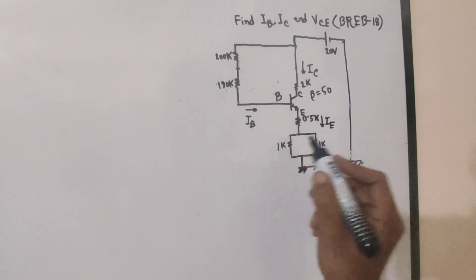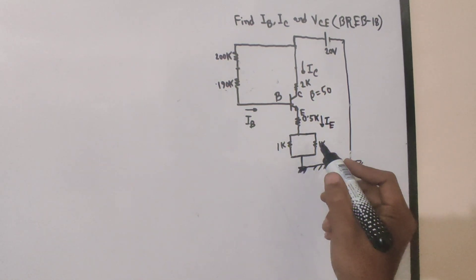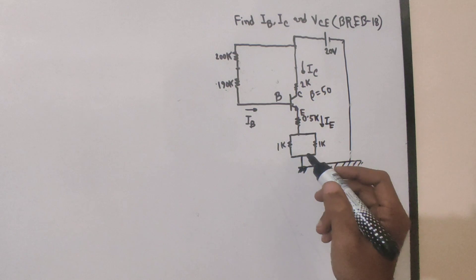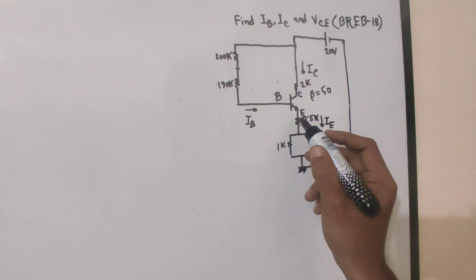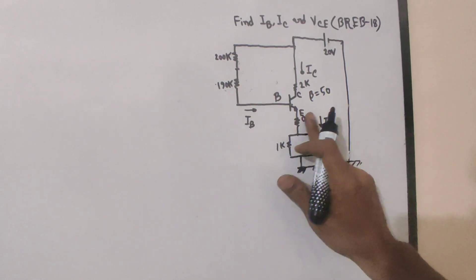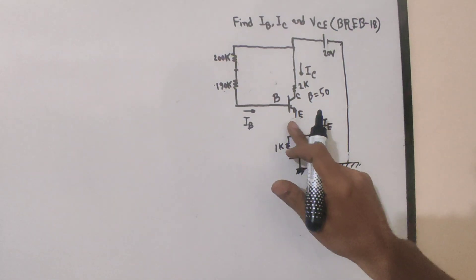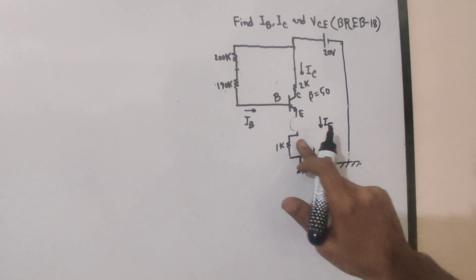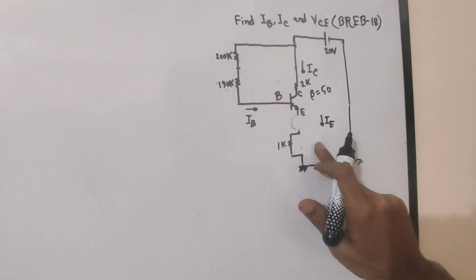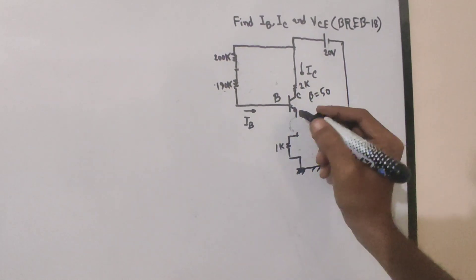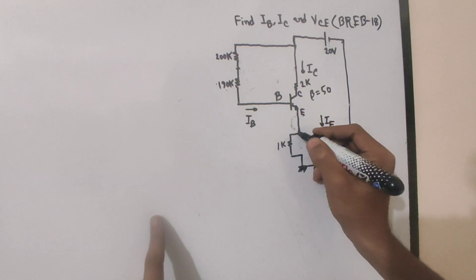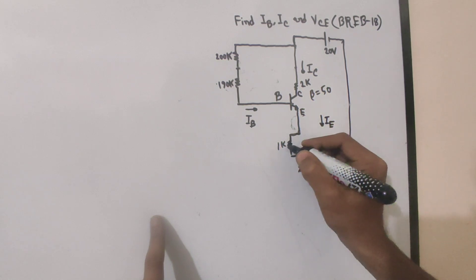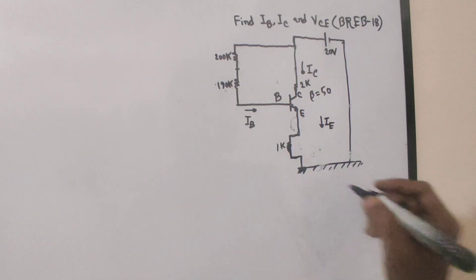To simplify the circuit: 1k and 1k in parallel gives 0.5k. So the parallel equivalent is 0.5k. With that, 0.5k at that node — and one 1k resistor gives us point five milliamps into one k.